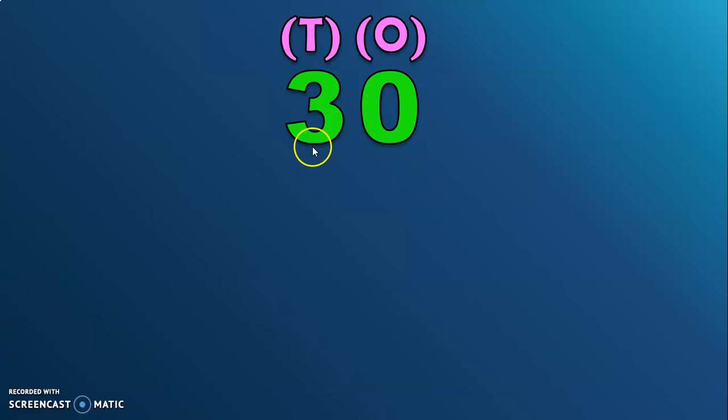In the number thirty, the ones position is empty. So, the number zero stands in the empty place and holds the position. If we do not have zero, what will happen? The number will become three. To represent the number thirty, we do need a zero in the ones place. So, here, zero acts as a placeholder.